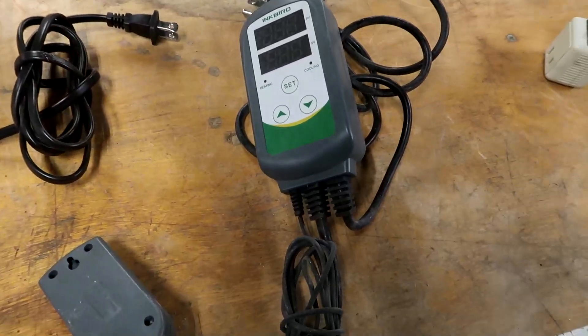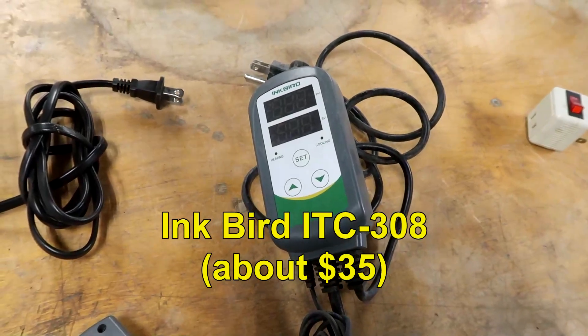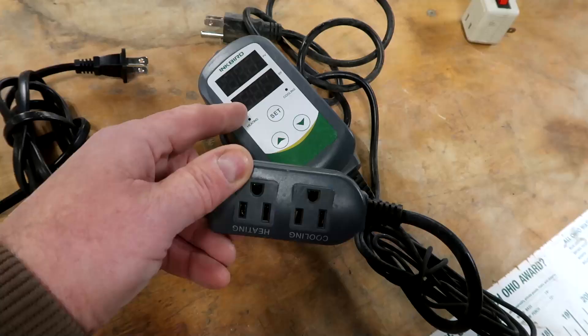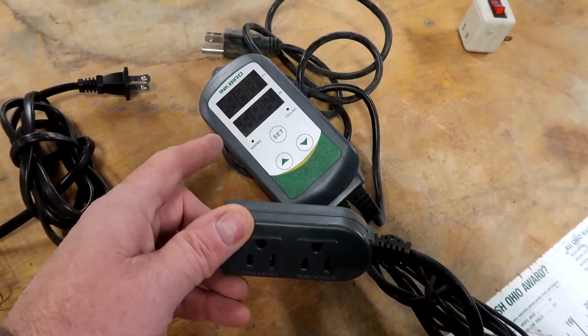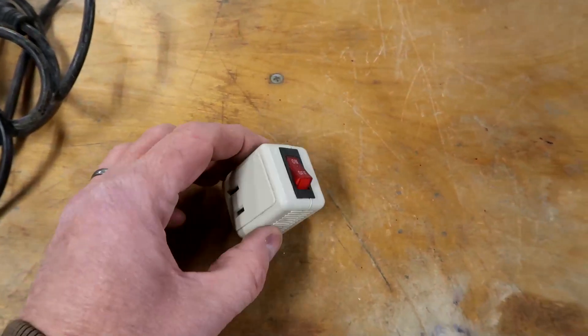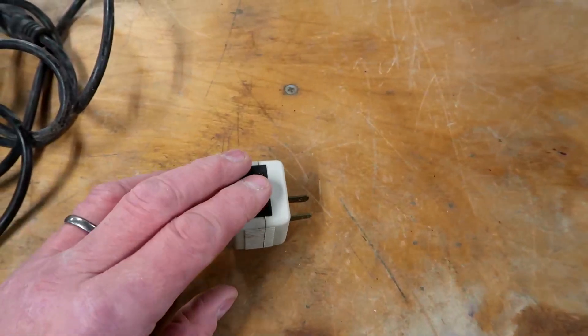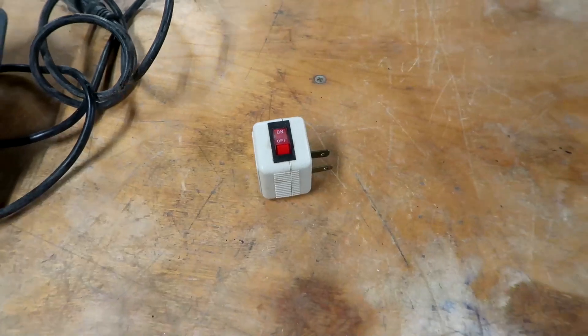And then I have this Inkbird thermostat. It's an ITC 308. I think it's the only one they make. This unit turns this on and off when it gets to the temperature desired. And lastly, I've got an on-off switch in line so I can just easily turn the whole system on and off without having to dig behind to unplug it from the wall.